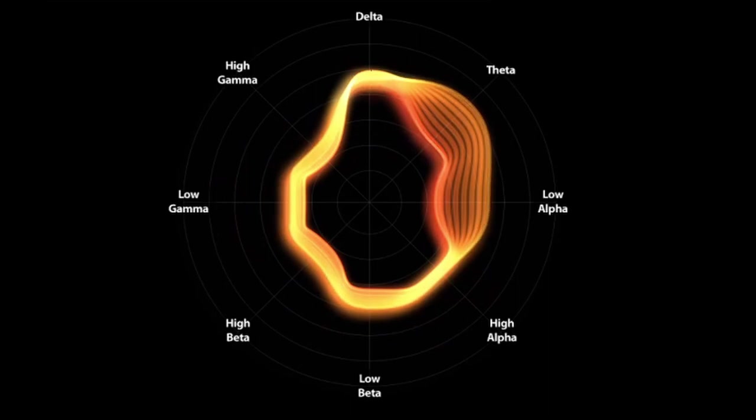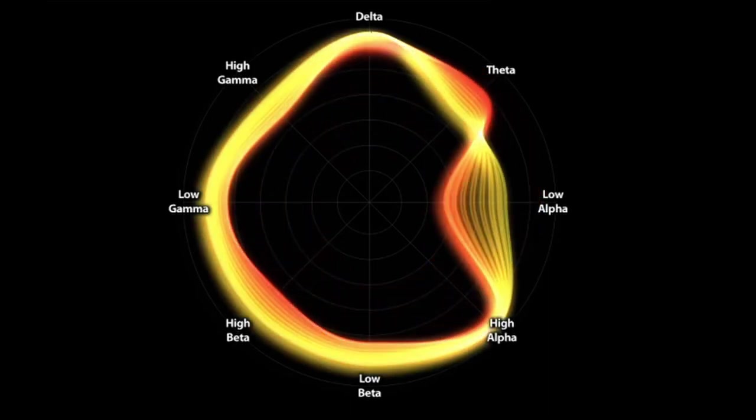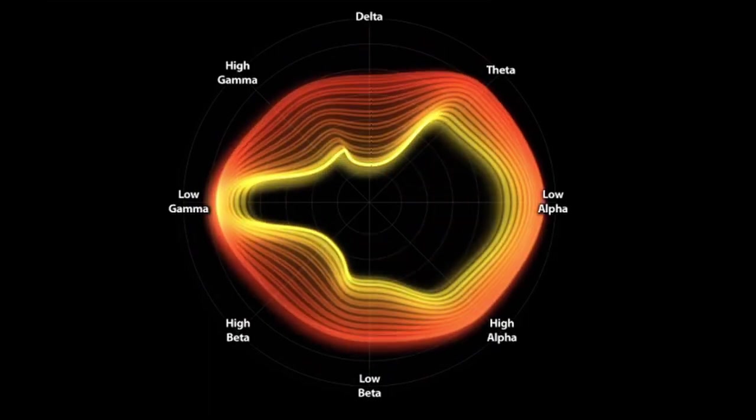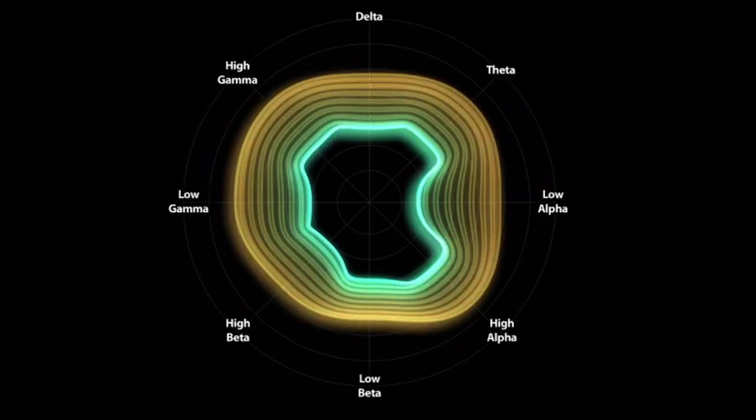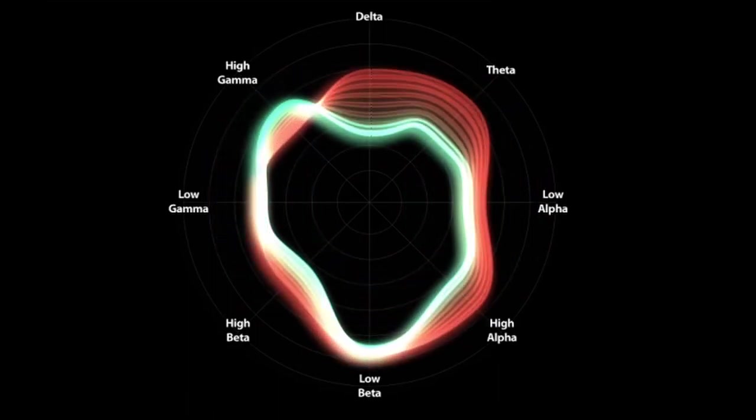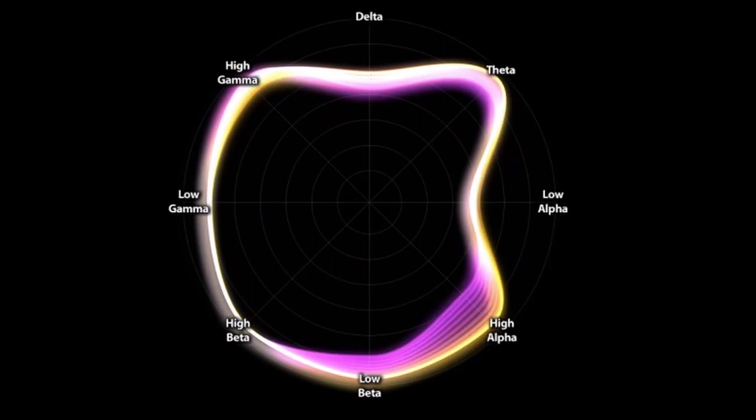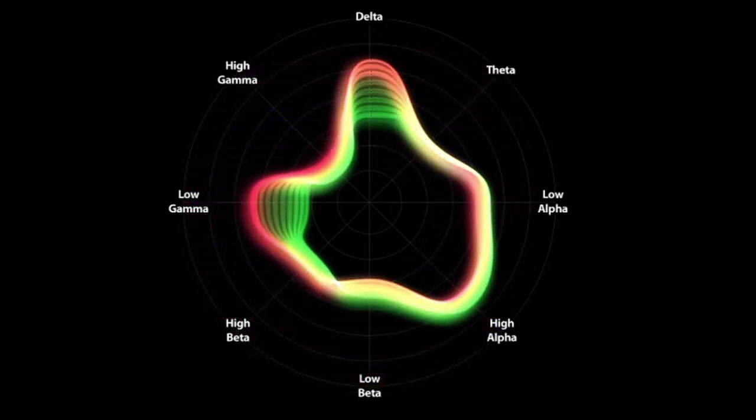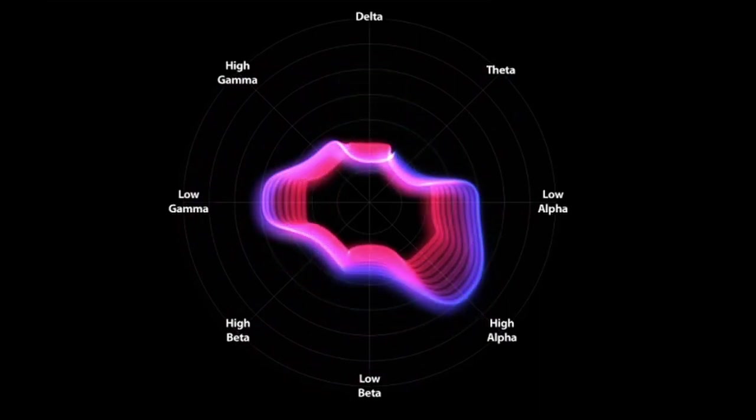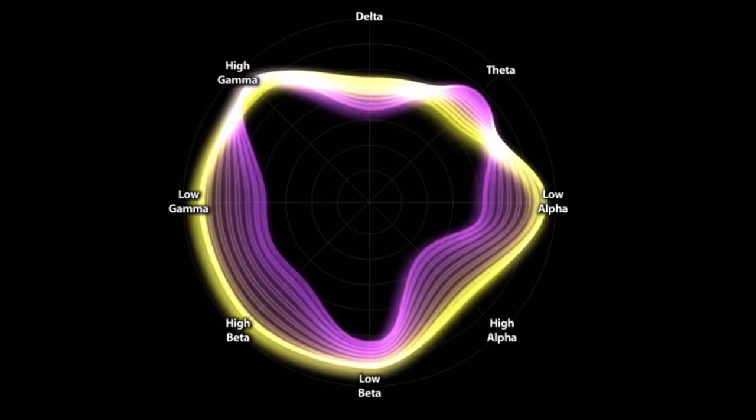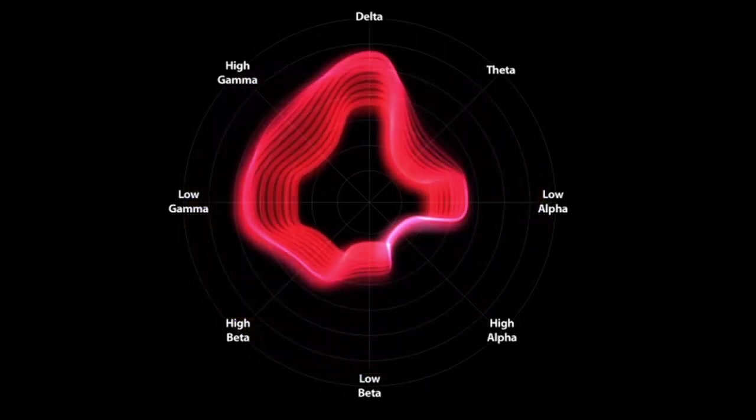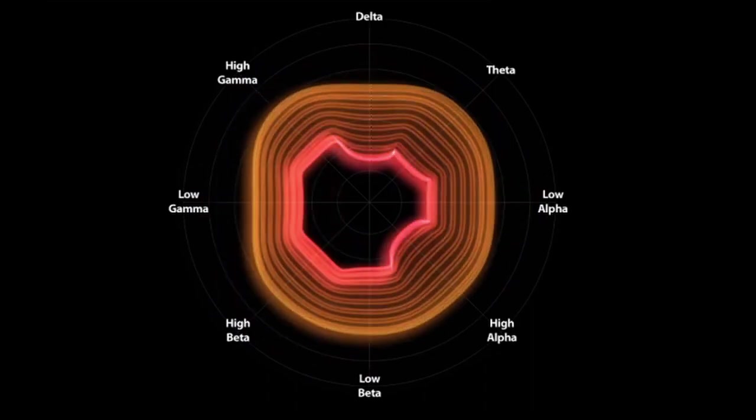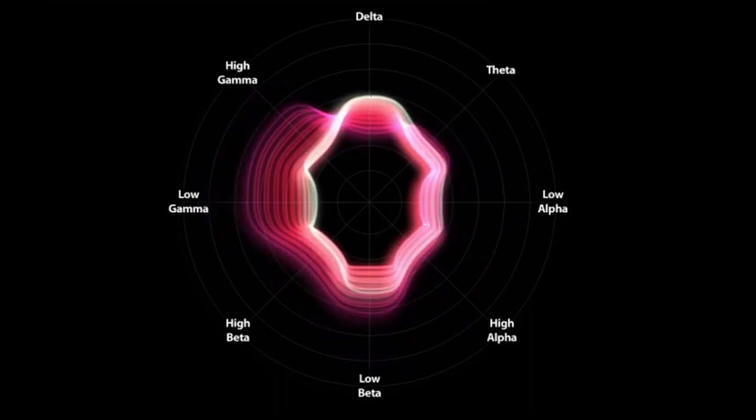Beta. Beta activity is fast activity. It has a frequency of 14 and greater hertz. It reflects desynchronized active brain tissue. It is generally regarded as a normal rhythm and is the dominant rhythm in those who are alert or anxious or who have their eyes open. It is the state that most of the brain is in when we have our eyes open and are listening and thinking during analytical problem-solving, judgment, decision-making, processing information about the world around us.